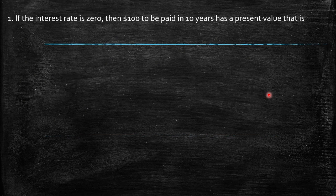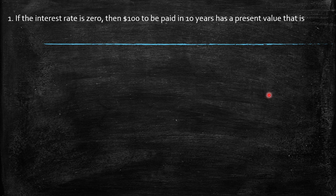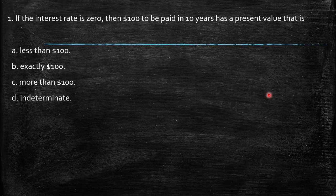If the interest rate is zero, then $100 to be paid in 10 years has a present value that is... Then we have these four options. We're going to look at how to proceed to solve this question.